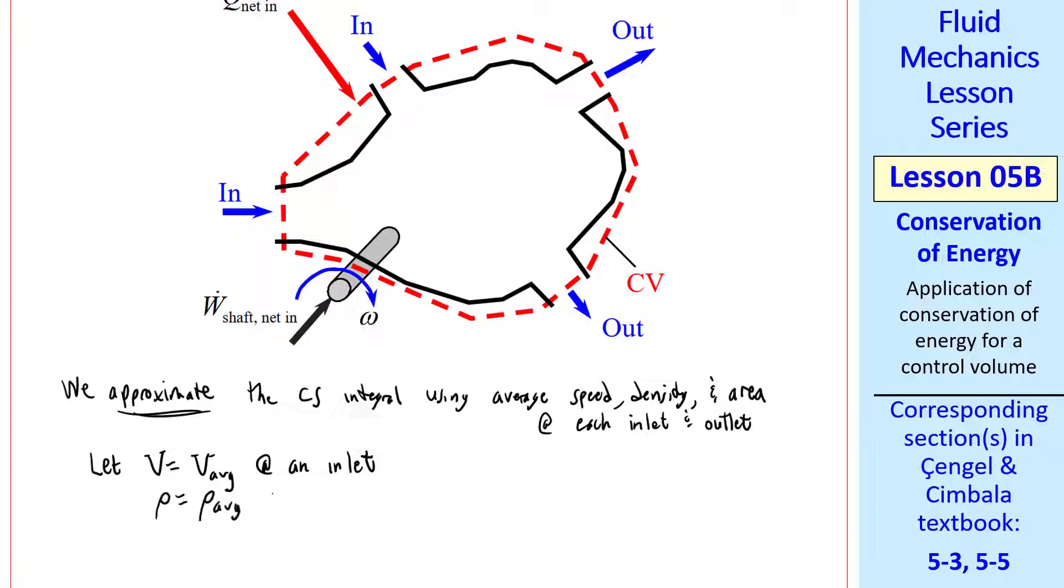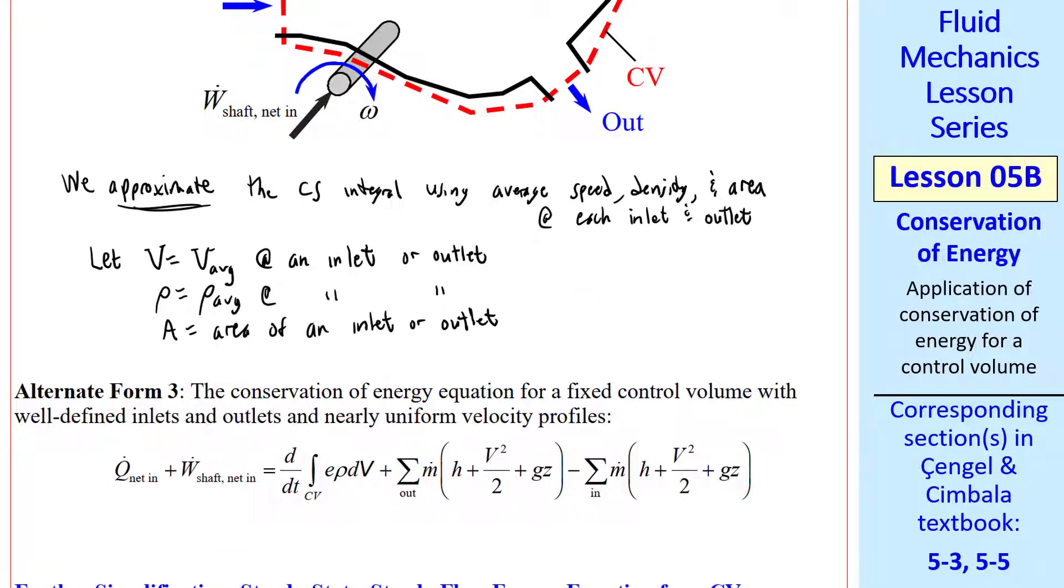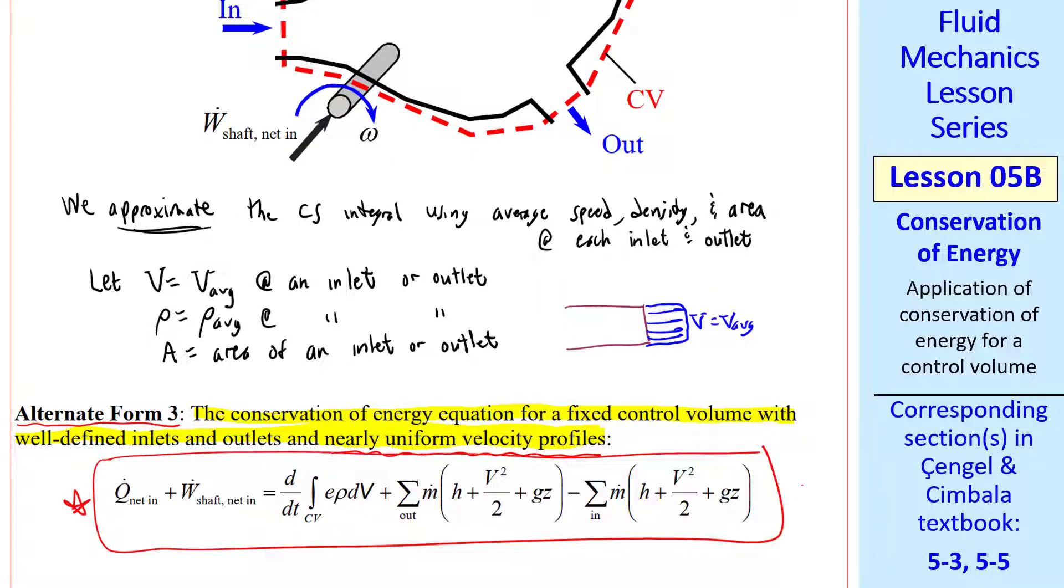We approximate the control surface integral using average speed, average density, and area, at each inlet and outlet. Let V equal V_average at an inlet. If you have a compressible flow problem, ρ is ρ_average, and A is the area of the inlet or outlet. Thus we get this approximate form of the energy equation: conservation of energy equation for a fixed control volume with well-defined inlets and outlets and nearly uniform velocity profiles. I call this alternate form 3. I'll call this equation 3, where we've replaced the integral by summations.